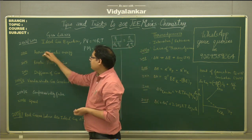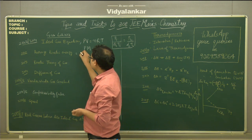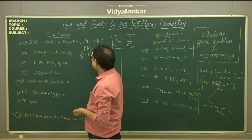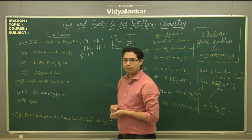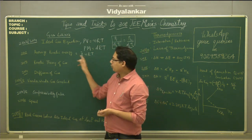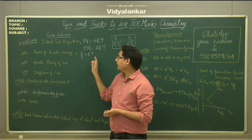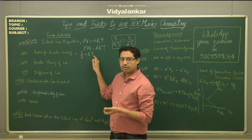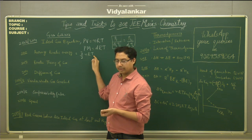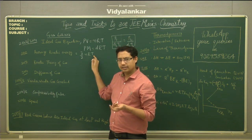Questions can also be asked on average kinetic energy. Average kinetic energy is equal to 3/2 nRT, where T is the temperature in Kelvin scale. So what you find is that average kinetic energy mainly depends on temperature. If you change the temperature, the average kinetic energy gets changed.